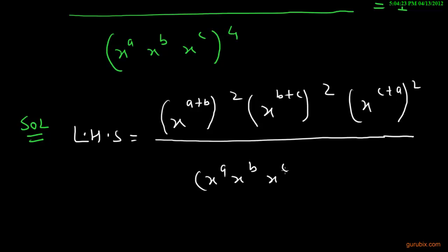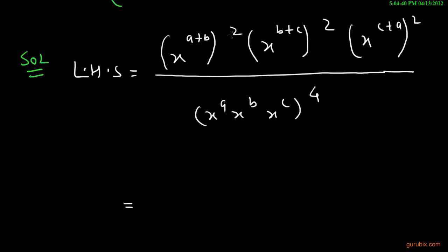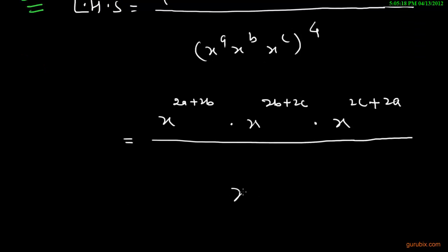Here is x raise to a, x raise to b, x raise to c, and power 4. First of all, we shall multiply a plus b with 2. Then it will be x raise to 2a plus 2b into x raise to 2b plus 2c into x raise to 2c plus 2a, and in denominator we can write it as x raise to a plus b plus c and the whole power is 4.